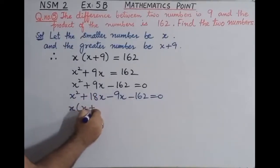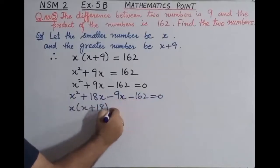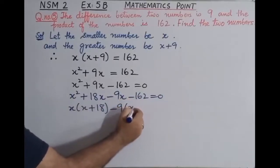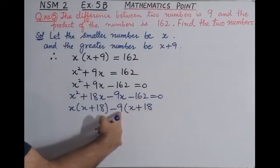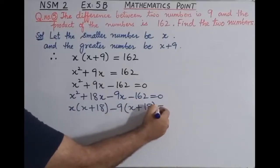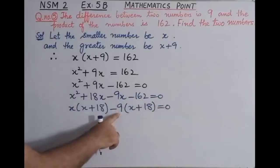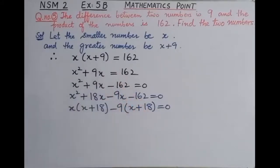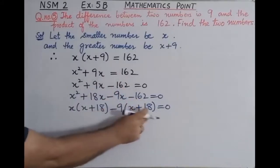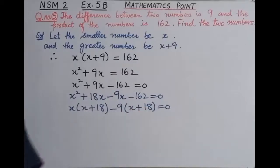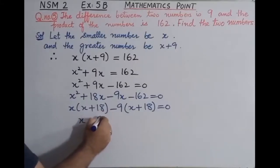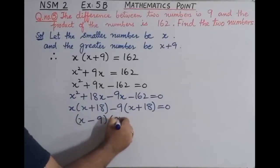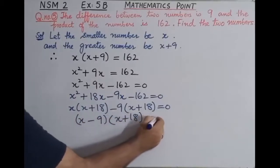अब common लेना है। यहाँ पे x common है, इधर आएगा x into x plus 18। यहाँ पे minus 9 common है, जब minus 9 common लेंगे तो यहाँ पे आएगा x plus 18 — minus change होकर plus आएगा — और 162 को 9 से divide करते हैं तो 18 आएगा। अब x plus 18 और x plus 18 common factors आएंगे। इस तरह से आपके पास factors आएंगे: x minus 9 और x plus 18, that is equal to 0.